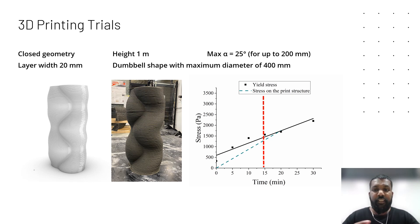We printed this dumbbell shape structure up to one meter height and with 400 millimeter diameter in one go. Similar to the last designs, the layer height is 10 millimeters and this structure has 100 layers stacked one on top of the other.